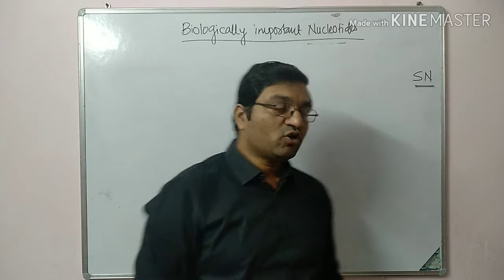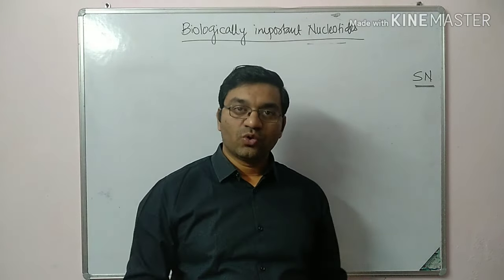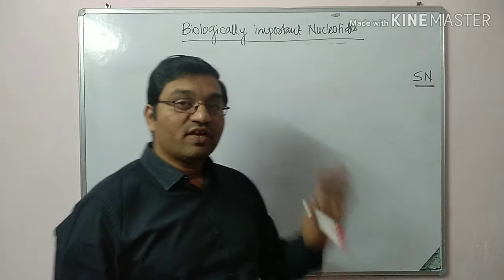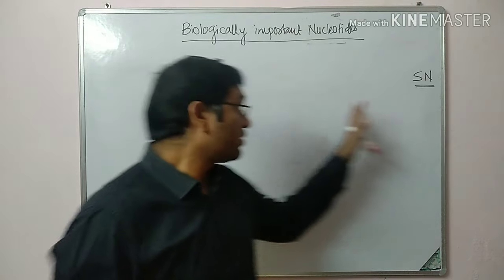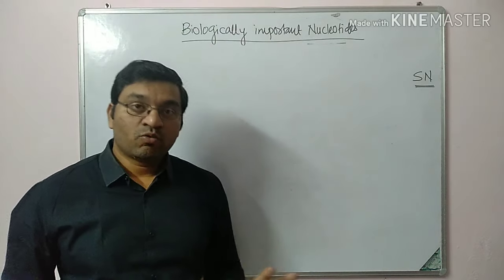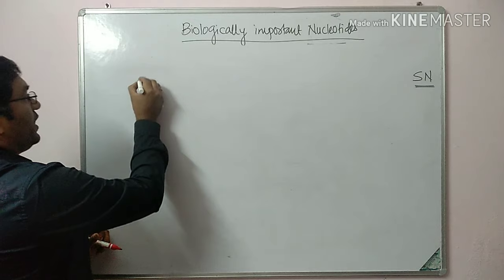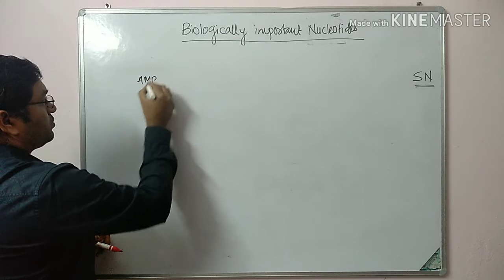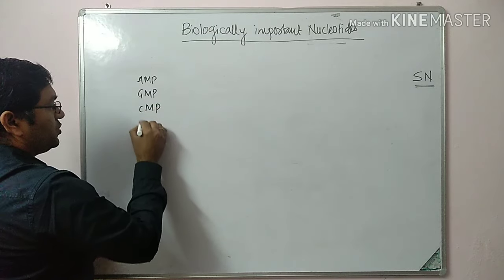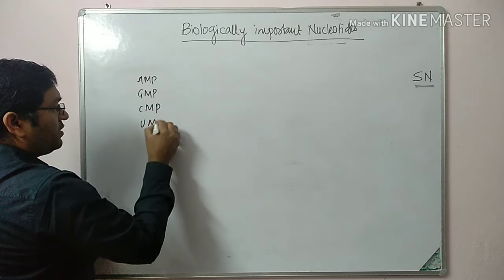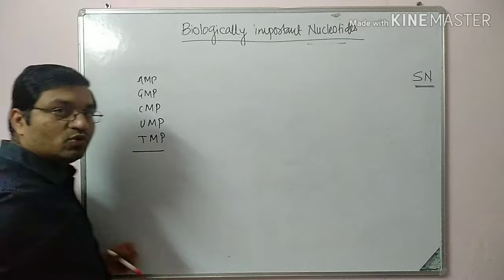Hello friends, today's topic of discussion is biologically important nucleotides. This is a very important short note in university examination. Biologically important nucleotides mainly includes AMP, GMP, CMP, UMP and TMP. These are the important nucleotides.